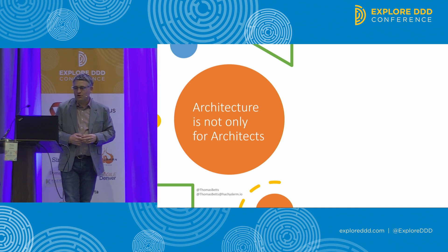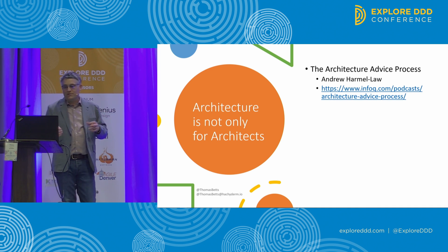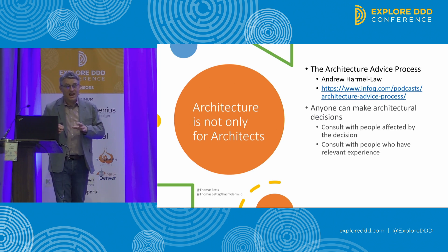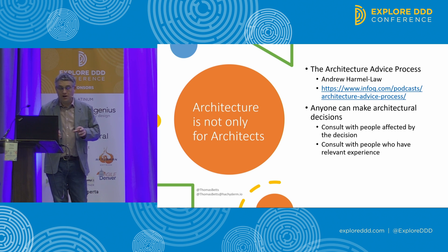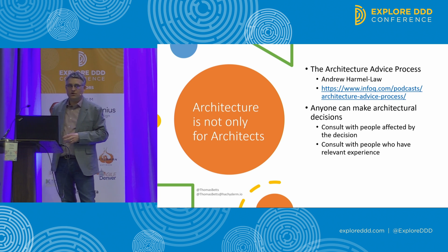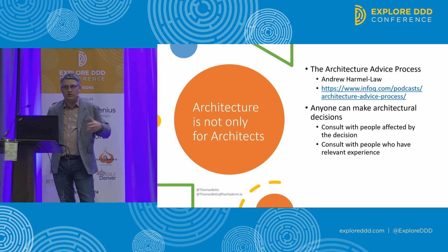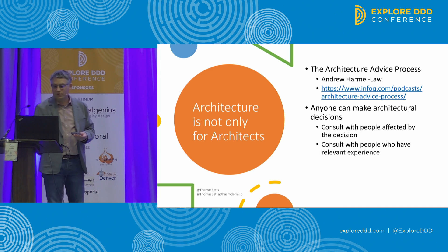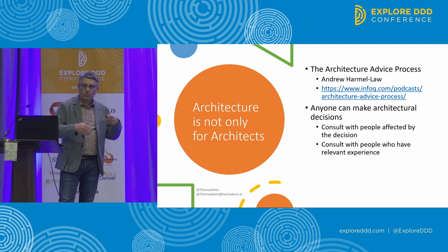I really appreciated talking with Andrew Harmel-Law about what he described as the architecture advice process. One of the key takeaways was: anyone can make an architectural decision, but with two caveats — they have to consult with the people that will be affected by the decision, and they have to consult with the people who have relevant experience. More junior employees might not know all those people, so you can help facilitate those conversations or be the expert who provides the knowledge.